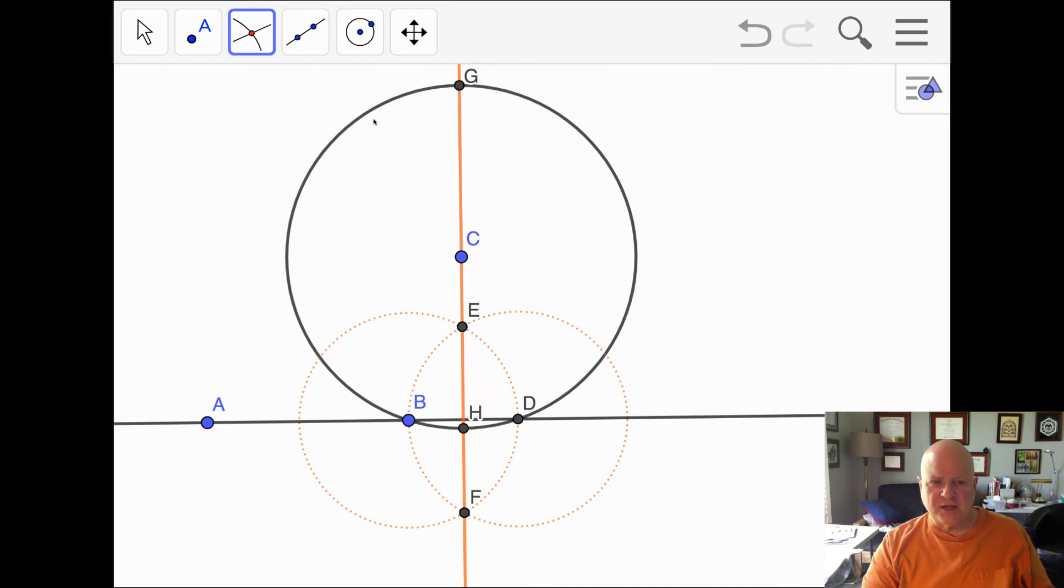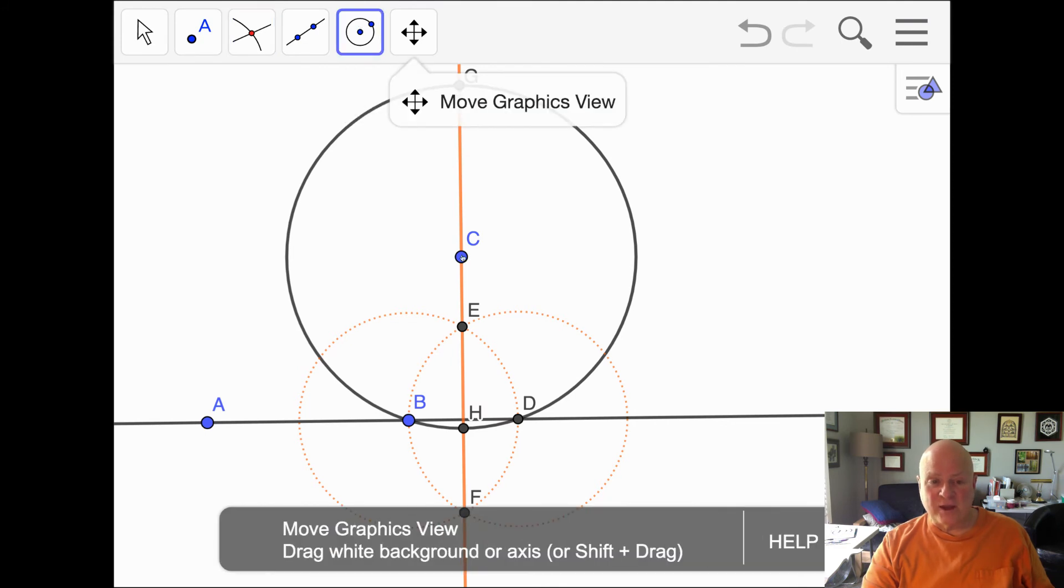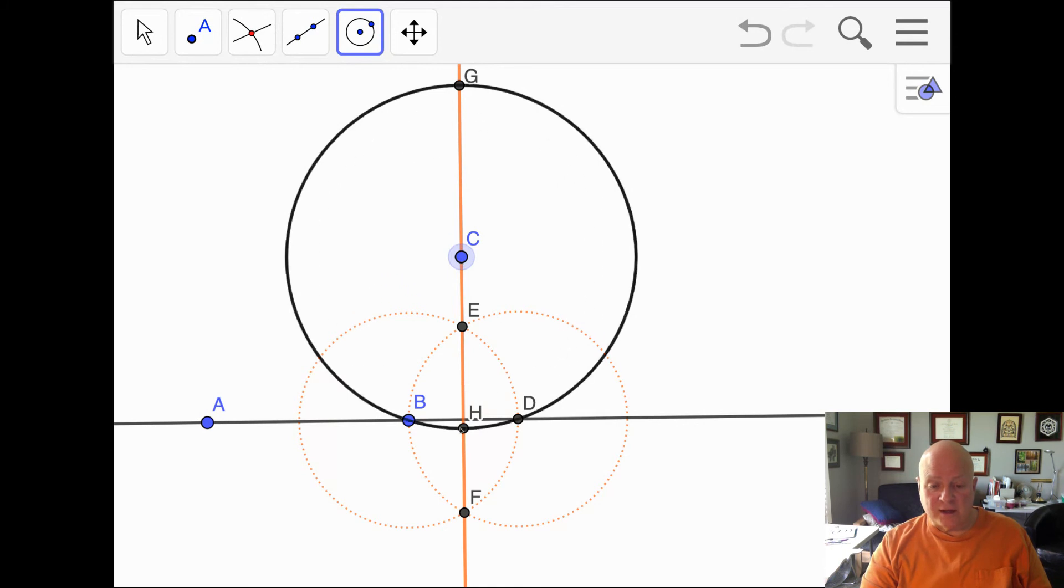G and H are the same distance from C. So they're both radii of circle C. I could have made a new circle there, but I didn't need to because I've already got the one circle. And I need to stop what I just did and go backward.